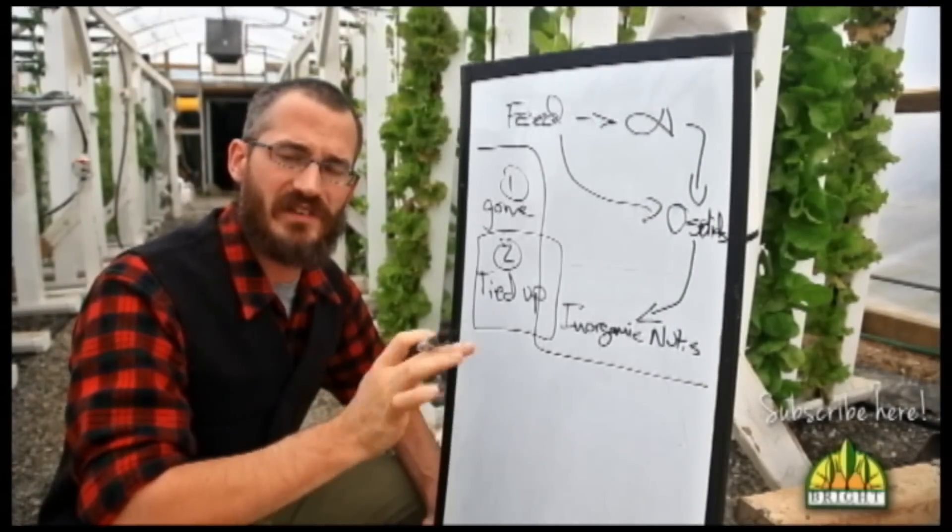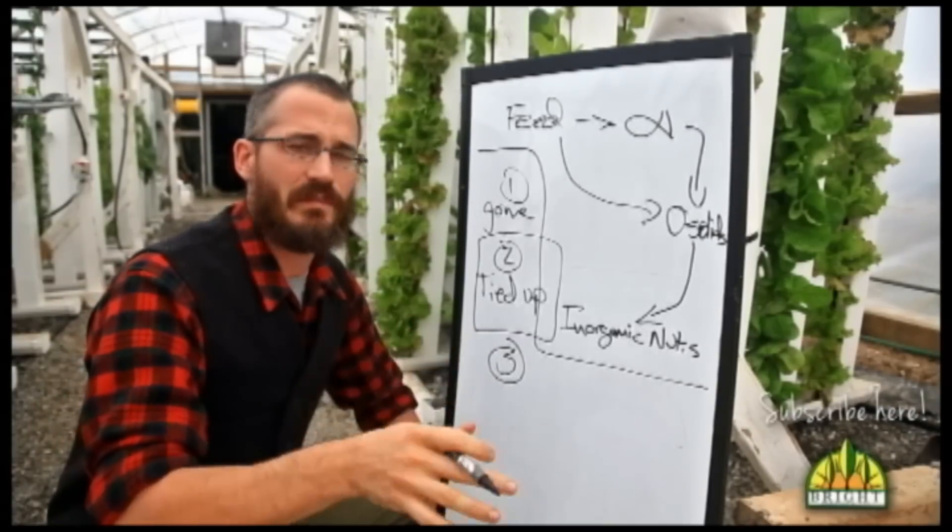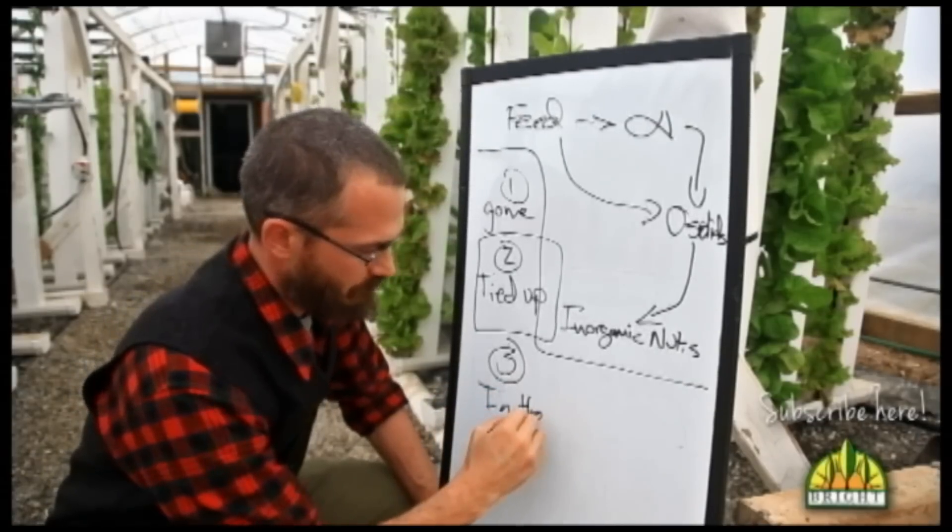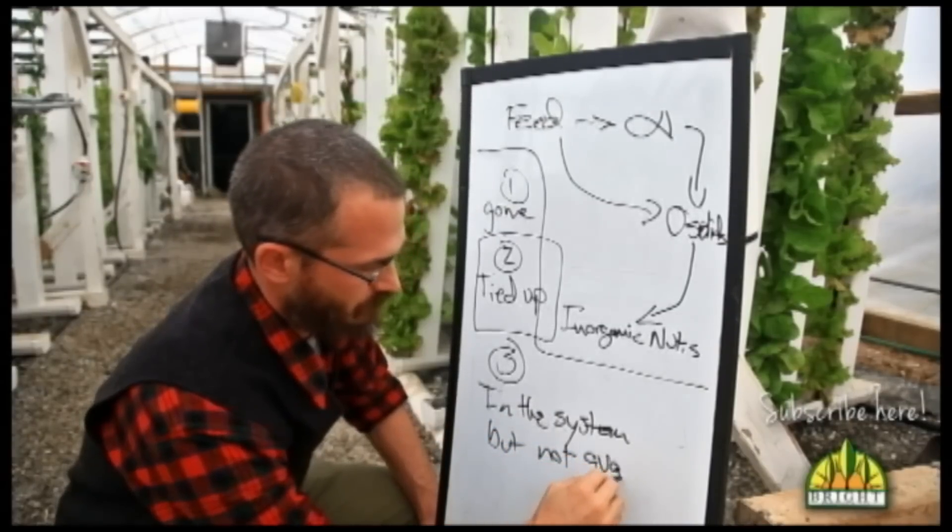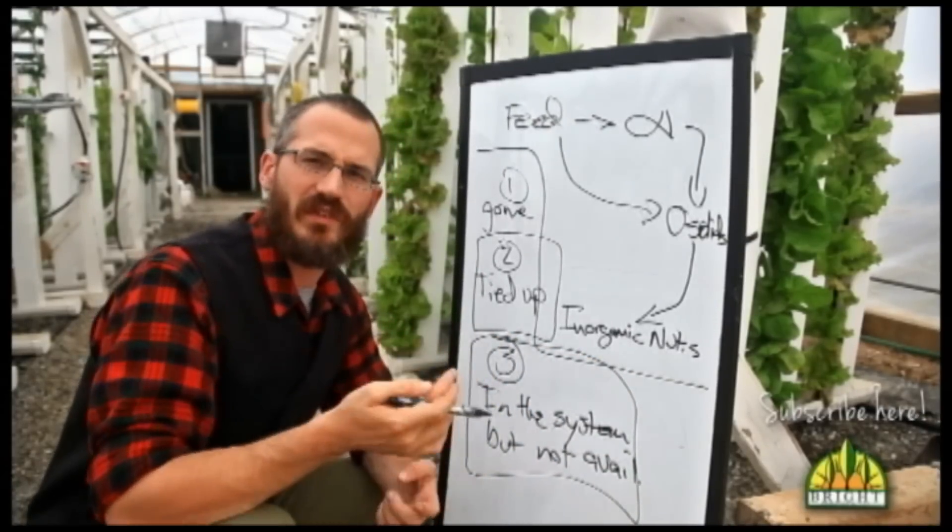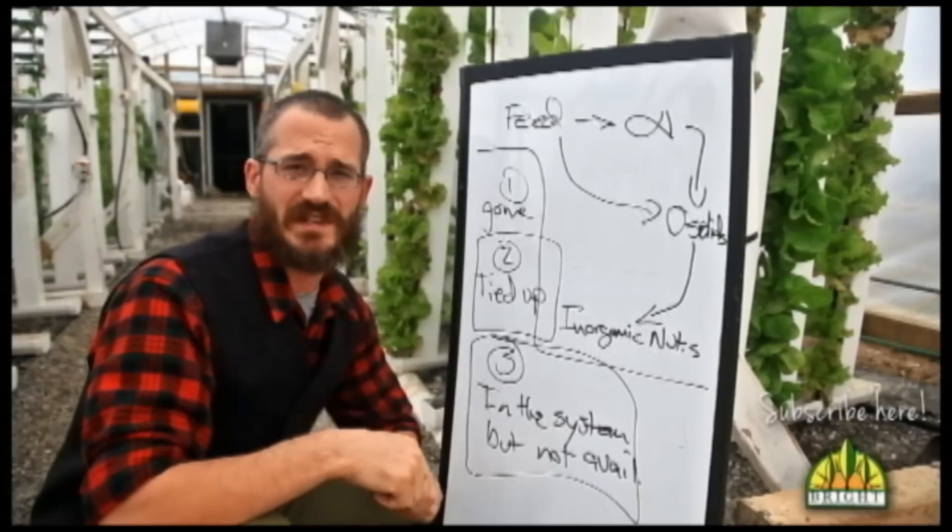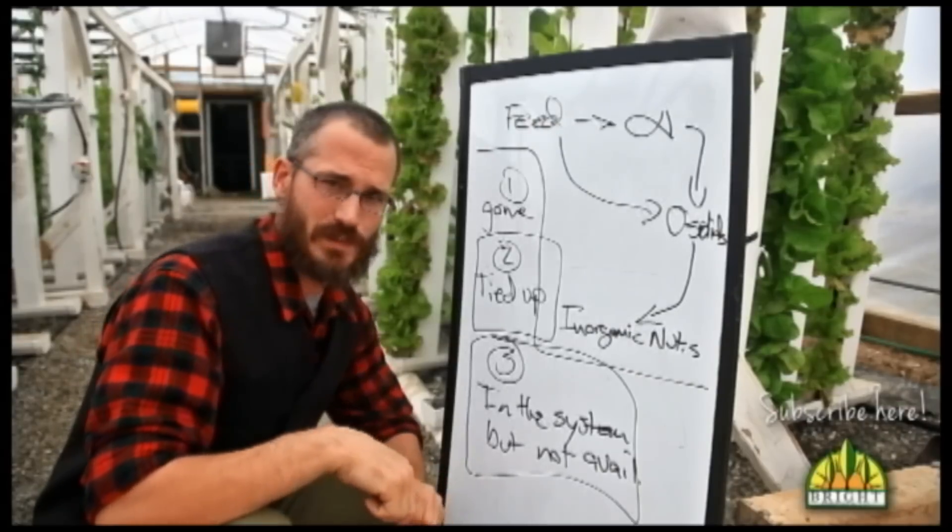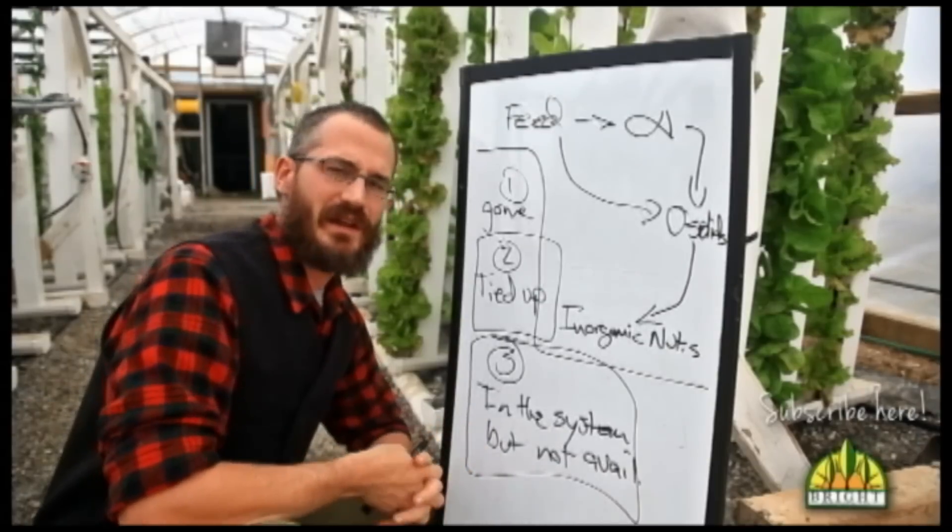So the third thing that can happen to nutrients in our system is that they can be available in the system but not available to the plants. So these are things like precipitates. And this is really most common. Most people are most familiar with the process of precipitation. So if we're talking about iron, oftentimes we're talking about precipitates. As I talk about potassium and even phosphorus, I'll talk about calcium-based precipitates. But precipitates are basically just inorganic solids that end up in our system.